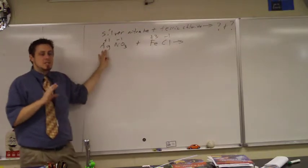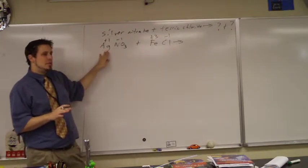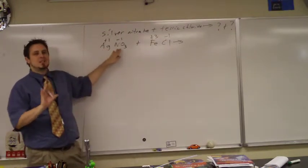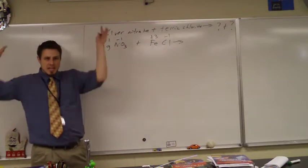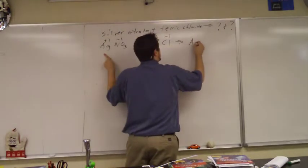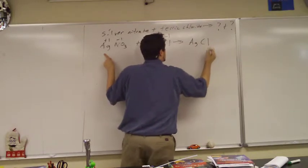So if there's going to be a switch happen, a double displacement reaction, the silver is going to have to go with the what? Well, it's already with the nitrate. So if it stays with the nitrate, nothing happened. So the silver is going to have to go with the chlorine.